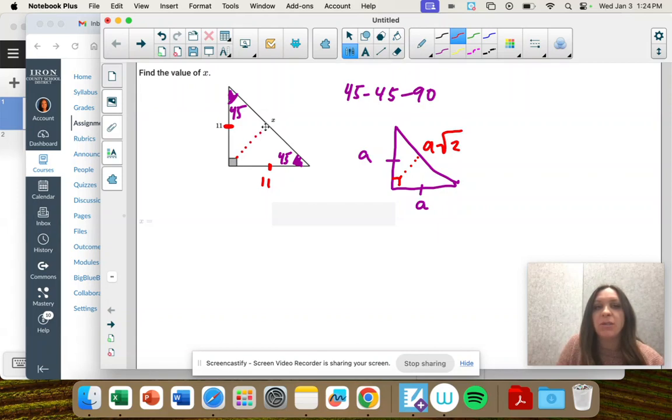So if we're looking for the hypotenuse, we take whatever the base, the legs are, which are 11, and then times it by the square root of 2. And that's the length of that side.